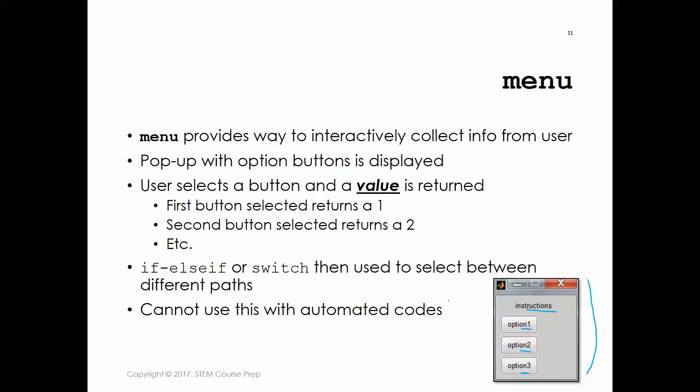The thing you have to realize is that when the user hits one of these buttons, MATLAB doesn't return what's listed on the button. The text on the button is irrelevant to MATLAB — it doesn't care what that button says. MATLAB sees a value returned when a button is hit. If they hit the first button, MATLAB gets a 1 returned; if they hit the second button, a 2 is returned, and so on. It goes top to bottom, and that's something a lot of students forget — they can't figure out why their menu isn't working, and that's why: it returns a value, not what's listed on the button.